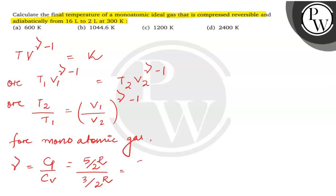After simplifying, gamma will be 5 upon 3. Now putting all the values in equation 1, T2 is what we have to calculate. T1 is given as 300, V1 is given as 16, V2 is 2, and gamma 5 upon 3 minus 1.